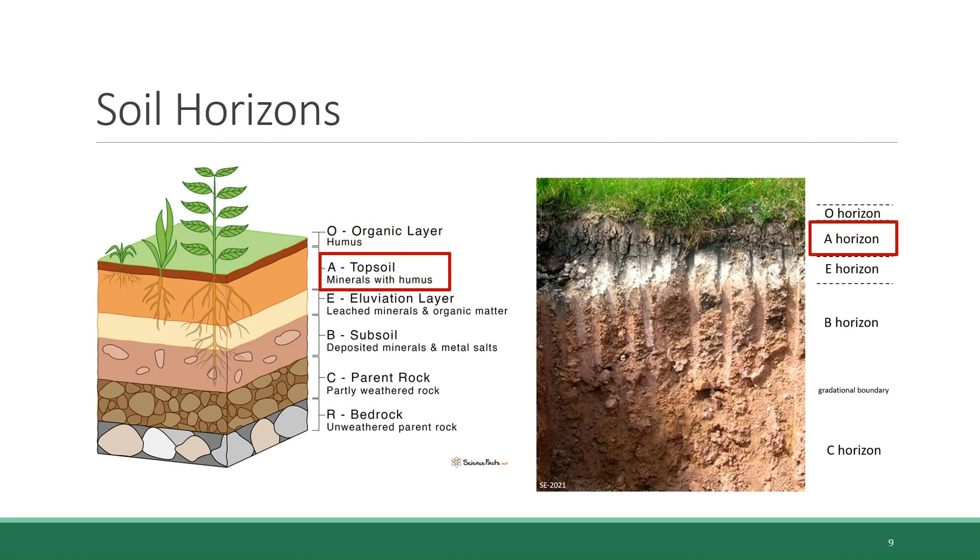Beneath the O-horizon is the A-horizon, which is also known as the topsoil. This layer is a blend of organic material and mineral particles. It's also often rich with microorganisms. This is the primary layer that supports the growth of plants.